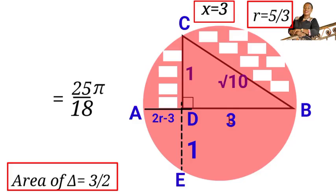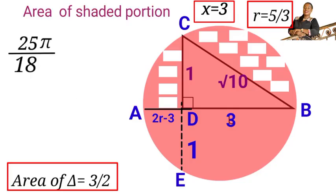And we also found the area of the semicircle. So now we have to subtract the area of the triangle from the area of the semicircle. So we have 25 pi over 18 minus 3 over 2.